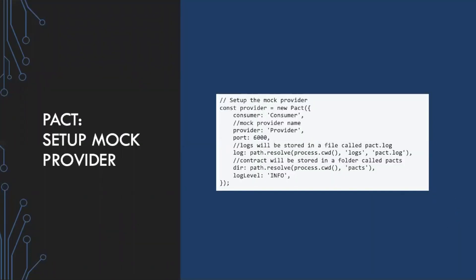We'll walk through setting up consumer tests and the code involved. The first thing we do is set up our mock provider using the PACT tool — we set up our consumer name, our provider name, and what port we're going to be running our mock provider on. We also define where we're going to be storing our PACT logs, so any time we send a request to the mock provider, it will log those interactions. The next thing we set up is where the contract will be stored after all the checks are passed — we need to set up a directory to store our PACT contracts.